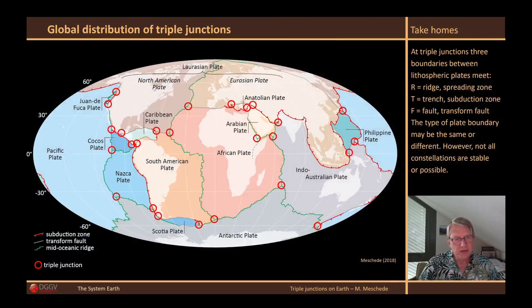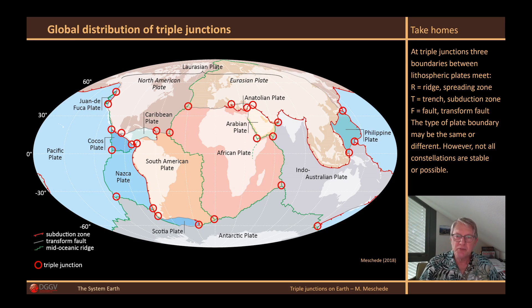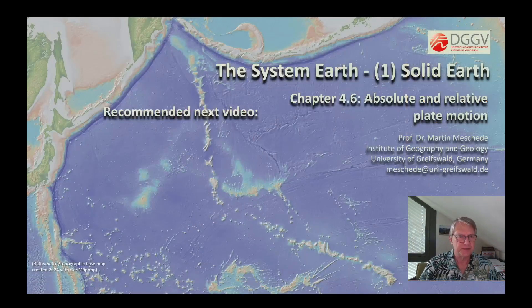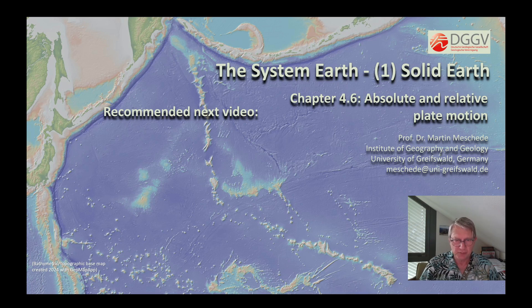So, you see, the definition of triple junctions is often not that easy. The position of the triple junction changes again and again, making it difficult to determine the exact location in many cases. Nevertheless, they are essential plate tectonic elements without which plate tectonic movement would not work. Thank you for listening, and I'll be happy if you stick around. I recommend continuing with the video on absolute and relative plate movements.